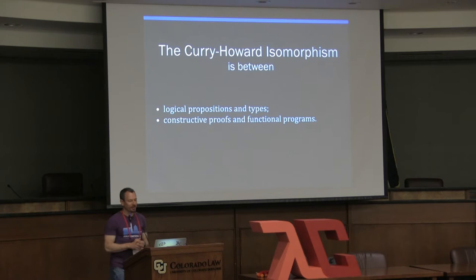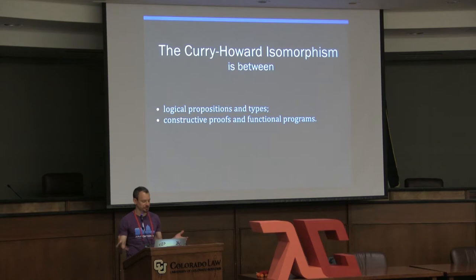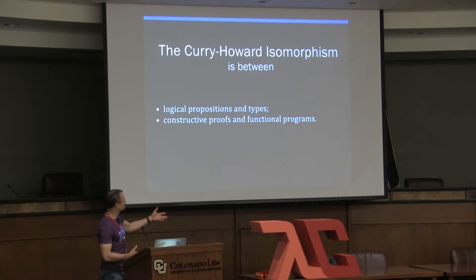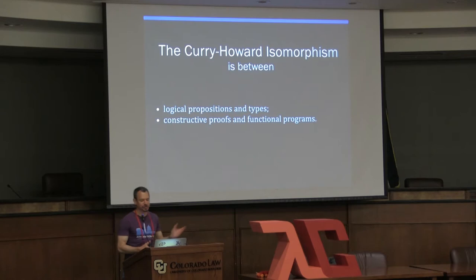The Curry-Howard isomorphism is an isomorphism — a morphism that has an inverse — and so it's necessarily between two structures. The structures here are logical propositions and types, and correspondingly, constructive proofs and functional programs. By logic in this context, we mean intuitionistic logic, and that actually makes a difference in a couple places I'll be talking about.